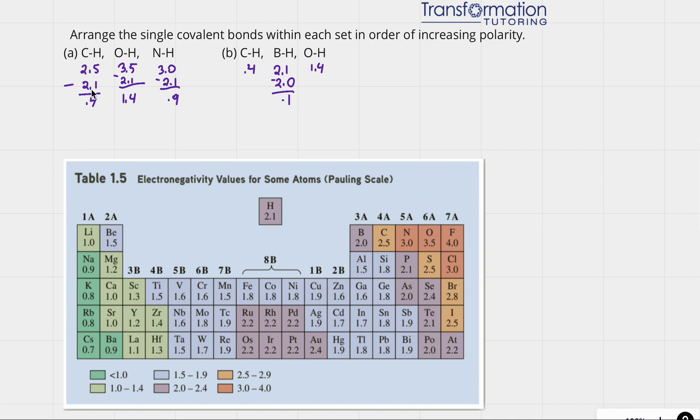So let's go ahead and do this. I already looked at electronegativity values. For example, for CH, carbon has an electronegativity value of 2.3 and hydrogen is 2.1. Then I subtracted the smaller number from the bigger. So my electronegativity difference here is 0.4. For OH, it's 1.4. And for NH, it's 0.9.